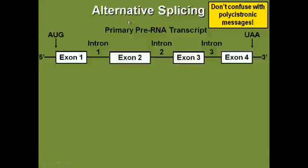Early on during the Human Genome Project, scientists thought there were about 100,000 genes based on the number of proteins seen in our bodies. Nowadays, they think there are about 20,000 to 25,000 genes, and the number keeps getting smaller. Why? Because they're finding fewer different genes but a greater number of proteins. How do you produce this diversity of proteins? It's from alternative splicing.